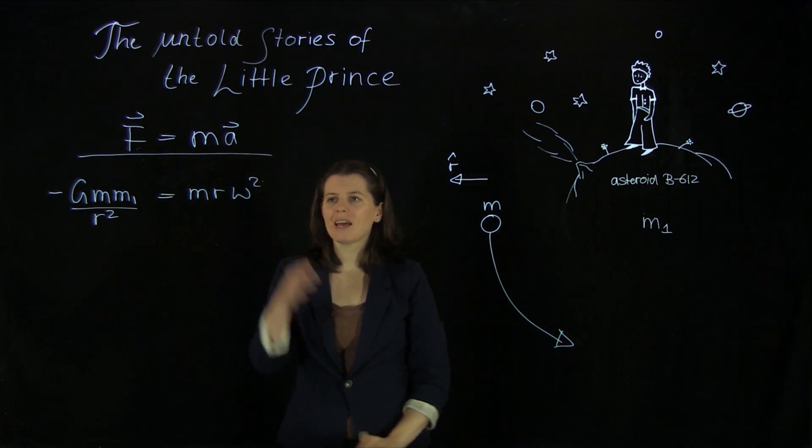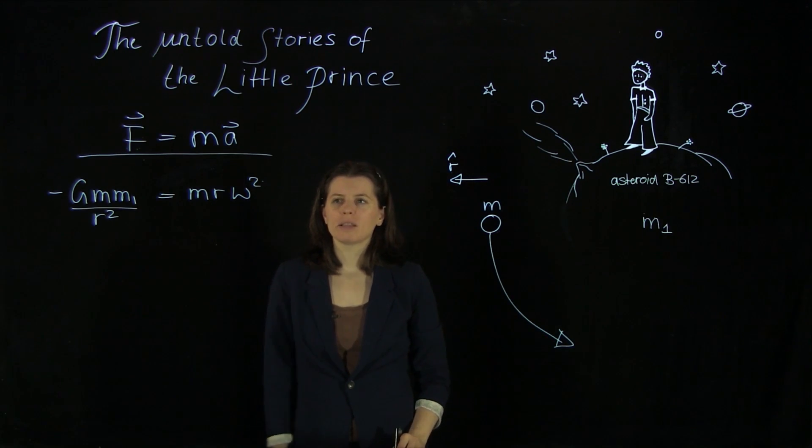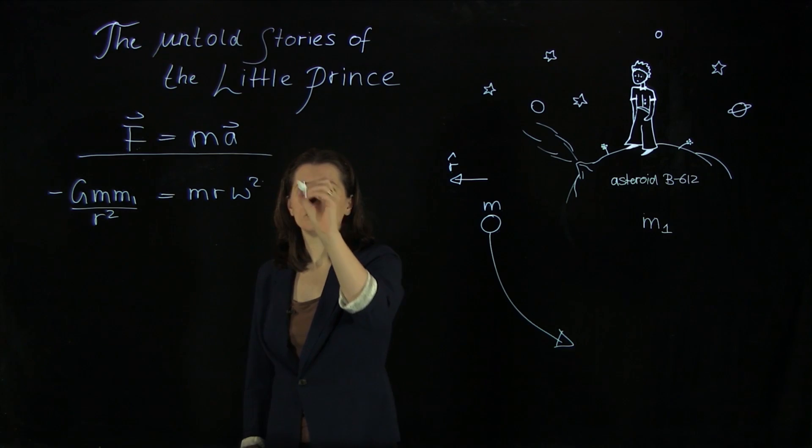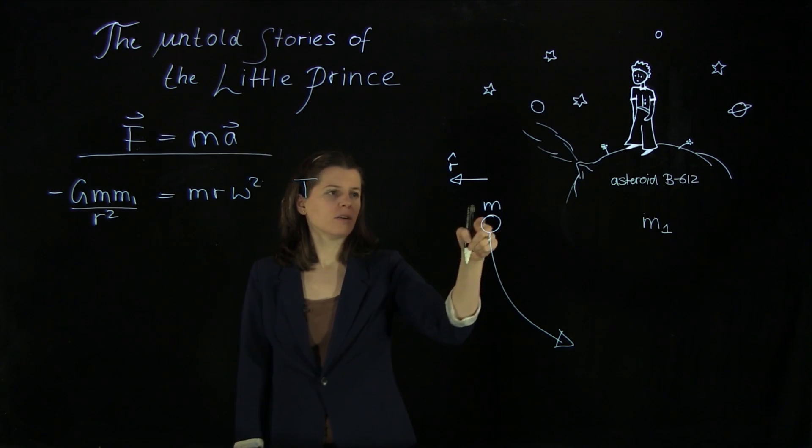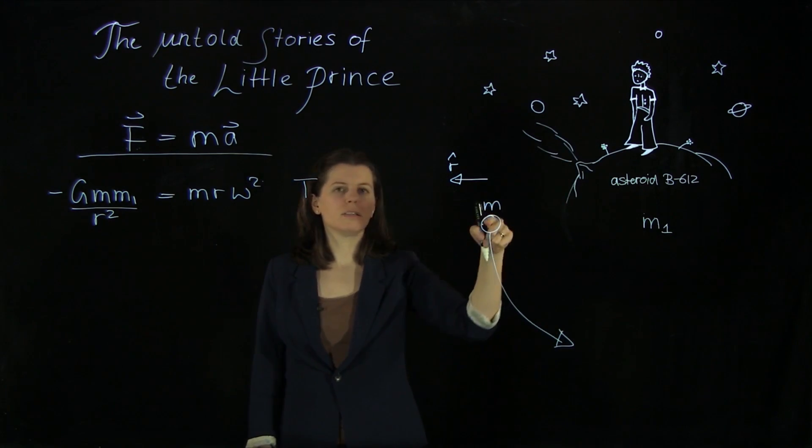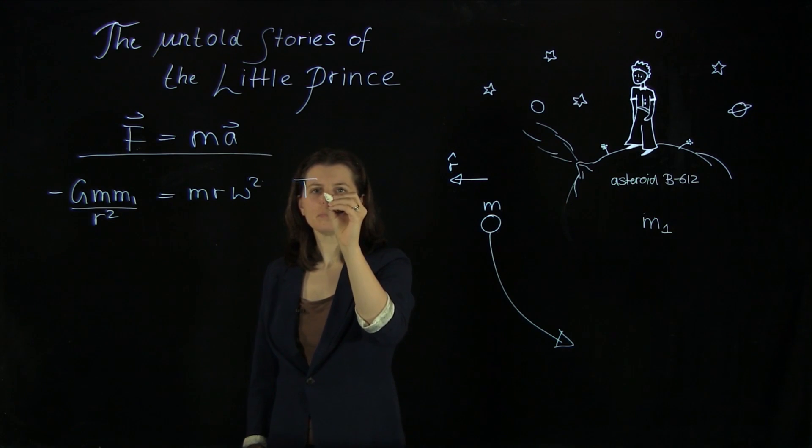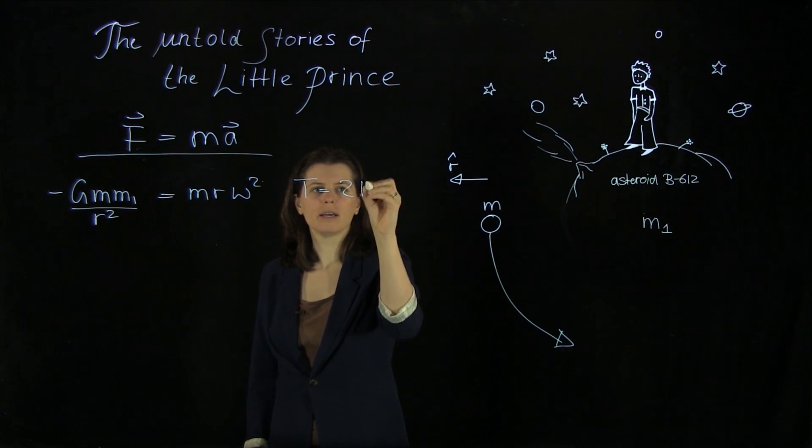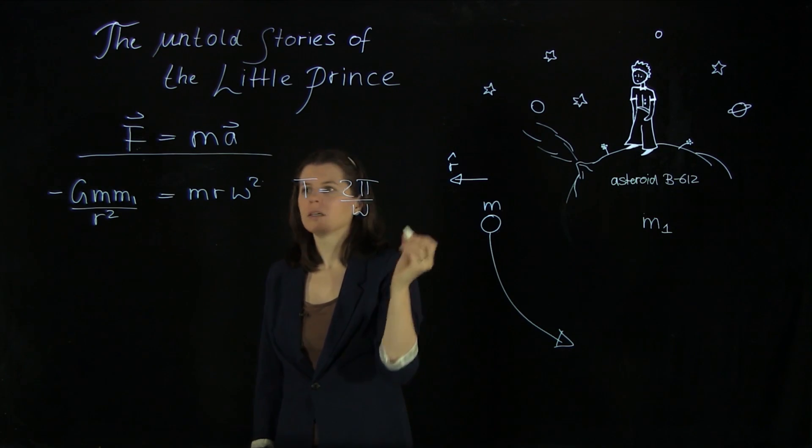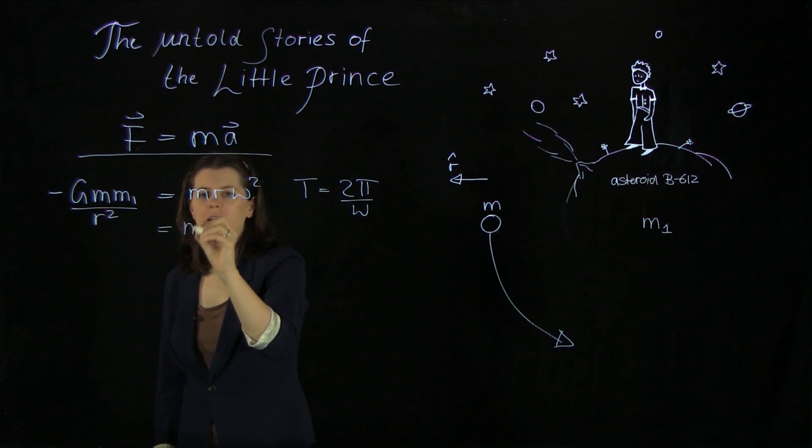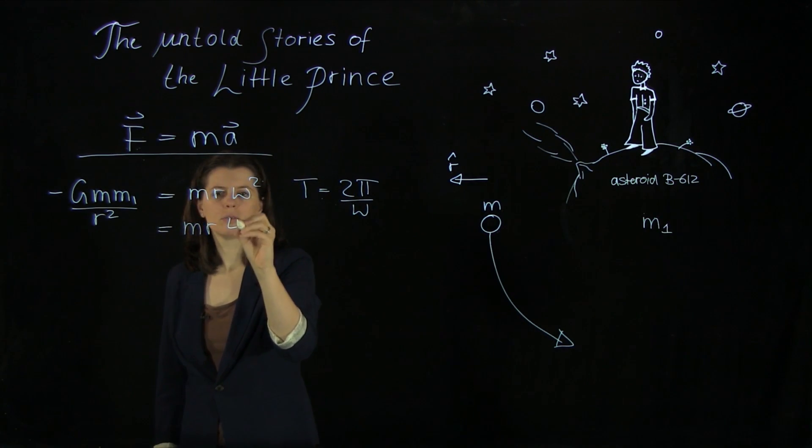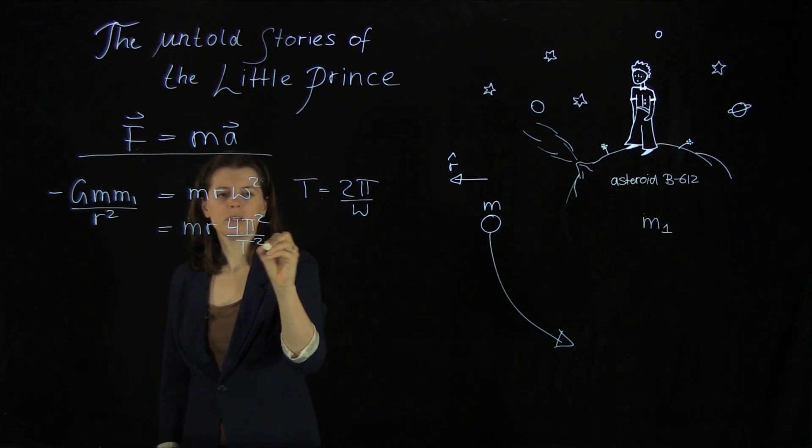Now, the Little Prince can't measure omega. But the Little Prince has a little time clock. So what he can measure is the period from here until he sees the body again. And that is 2 pi over omega. So we can add that in here, m r 4 pi squared over t squared.